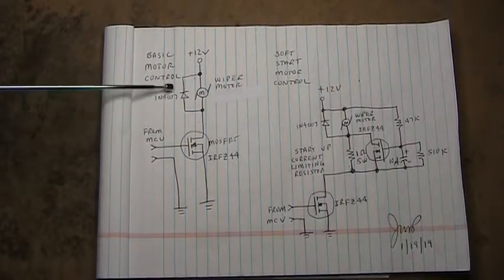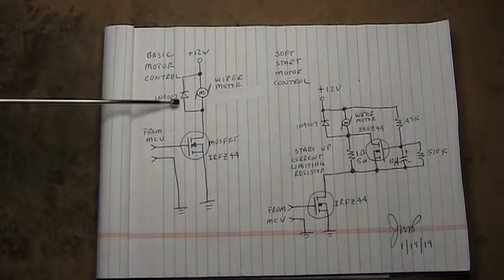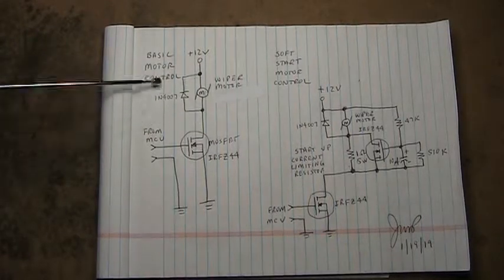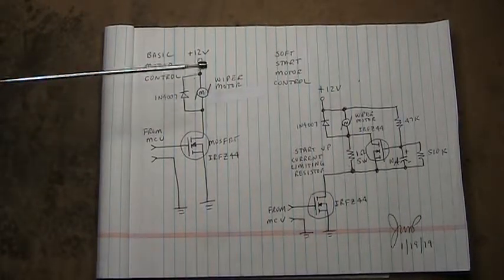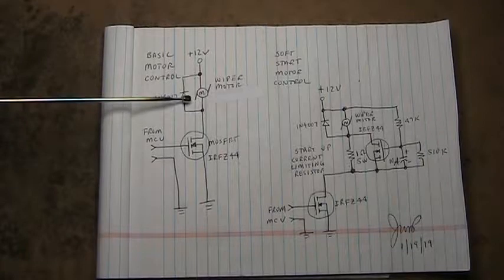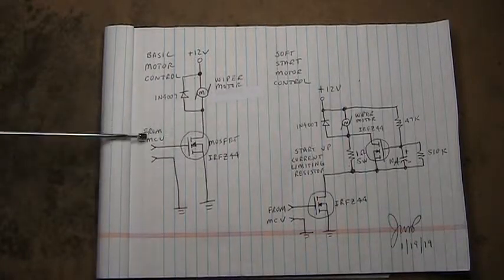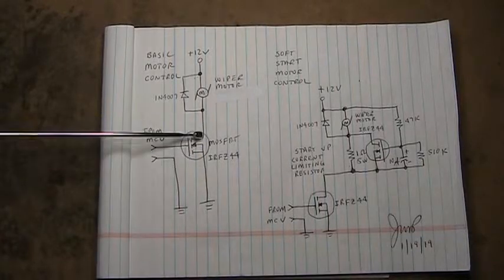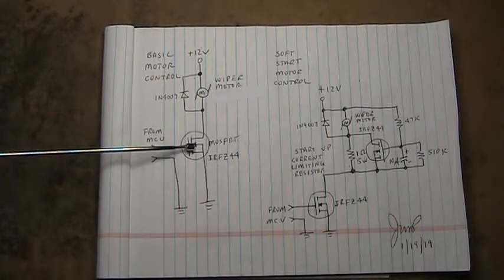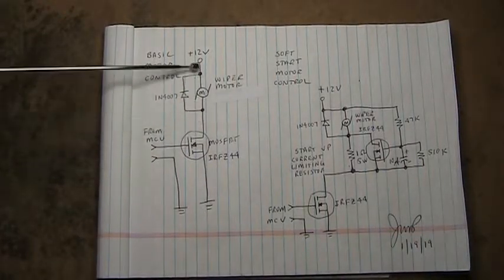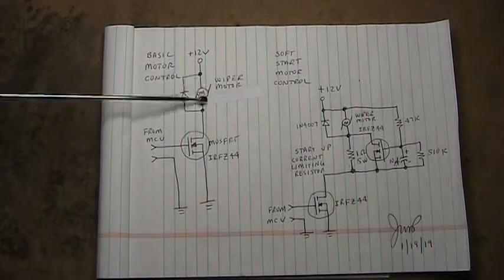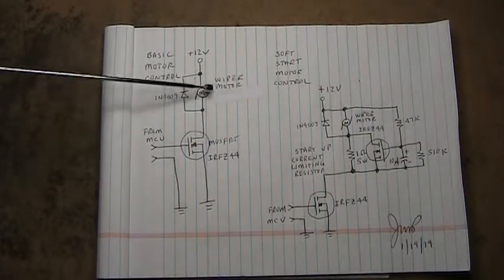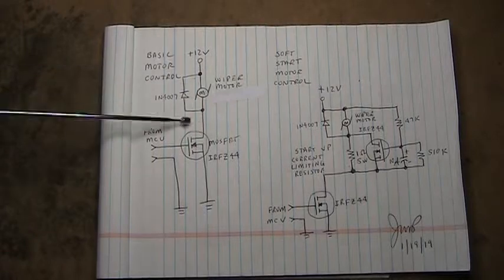And as usual you should always use a flyback diode to catch and reduce any voltage spikes from the inductive load of a motor. So this is your basic circuit. A signal comes in from your MCU, turns on the MOSFET power transistor, and you have current going through your wiper motor. And when it shuts off, any kind of voltage spikes from the inductive load are captured by this diode.